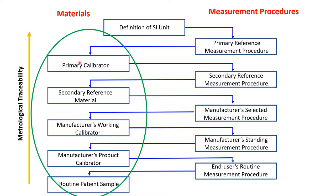I want to focus on the materials used in the standardization process. The various reference materials used in the transfer protocols are key components in transferring the accuracy of the primary reference measurement procedure to the end user's routine measurement procedures. Reference materials are used to establish trueness of measurement procedures through calibration or to assess the trueness of the calibration of a measurement procedure. Uses may include the calibration of a measurement system, assessment of a measurement procedure, assigning values to other materials, and quality control. A reference material can only be used for a single purpose in a given measurement process.